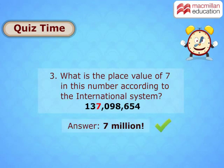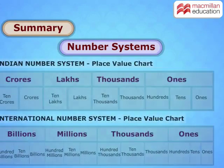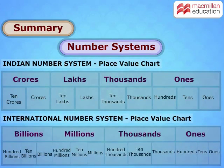Question 3: What is the place value of 7 in this number according to the international system? 7 million! The place value charts of the Indian and international systems are different, and so are the points where the commas are placed.